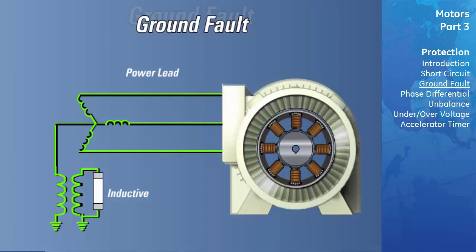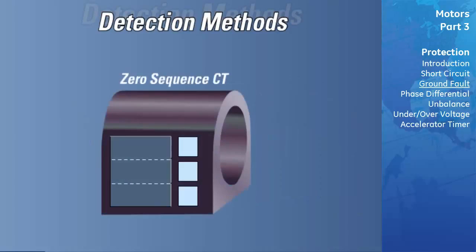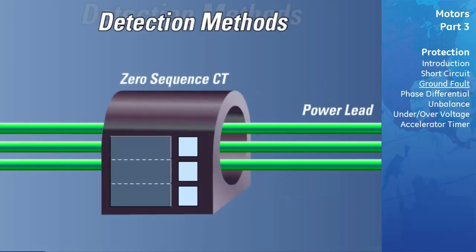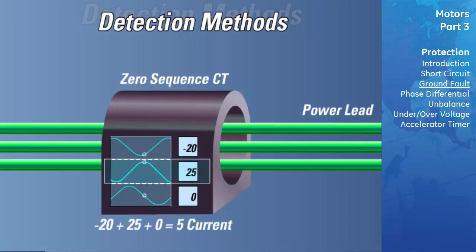There are several ways by which a ground fault can be detected. The most desirable method is to use the zero-sequence CT approach, considered the best method due to its sensitivity and inherent noise immunity. All phase conductors are passed through the window of the same CT, referred to as the zero-sequence CT. Under normal circumstances, the three phase currents will sum to zero resulting in an output of zero from the zero-sequence CT secondary. If one of the motor's phases were to short to ground, the sum of the phase currents would no longer equal zero, causing a current to flow in the secondary of the zero-sequence CT. This current would be detected by the relay as a ground fault.